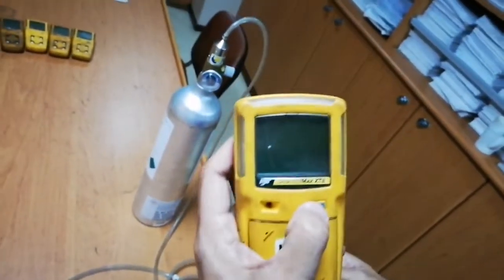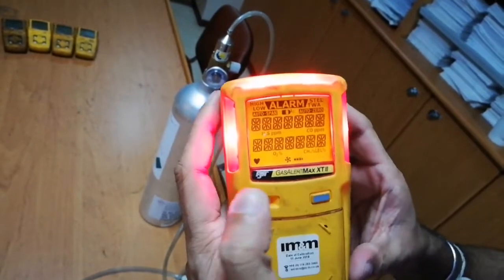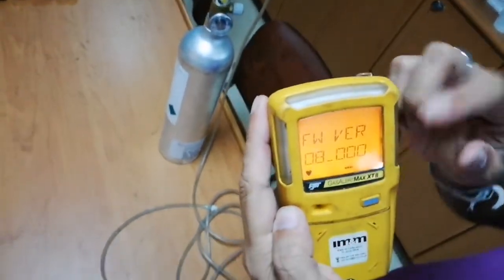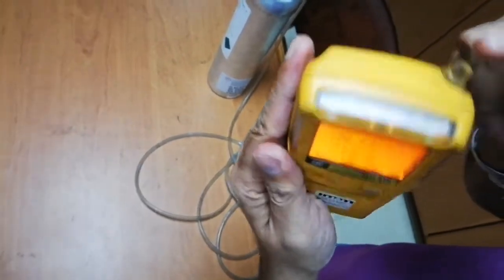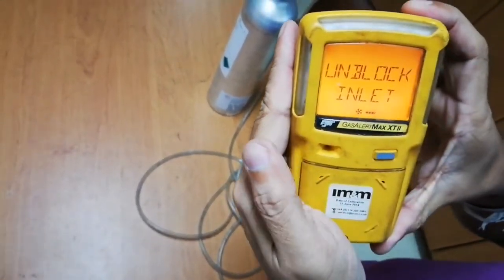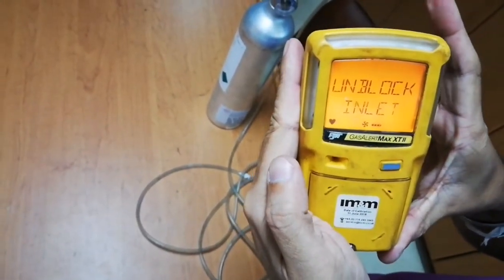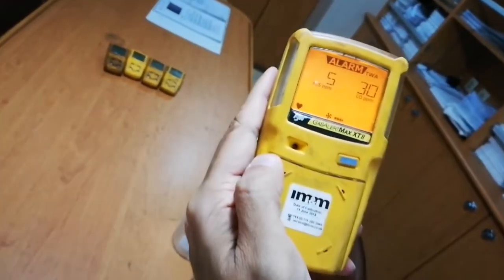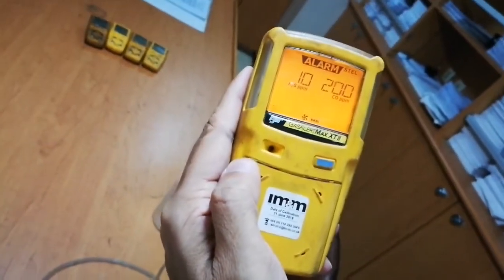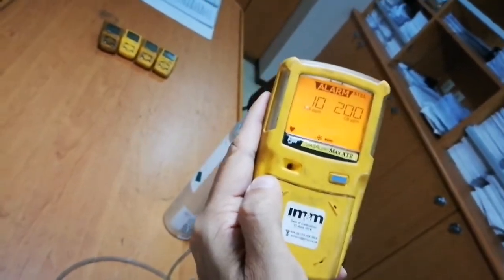Now I'll switch on this multi-gas detector. As I mentioned before, it has an inbuilt air motor. First, it will ask to block the inlet for the pump. Once we block the pump, it verifies the pump is working. After that, normal procedure is it will do the self-test by itself.